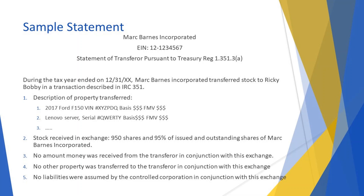Bullet 1 describes the property transferred. A few years ago, we had a section 351 transfer that was 4 or 5 pages long — over 100 assets. Remember, more detail is better, and keep a copy in your client's permanent file. In 2019, we had an audit of an S corporation and the IRS wanted proof of basis, including a copy of the original check issued to purchase the corporate stock. This client had been in business for 30 years.